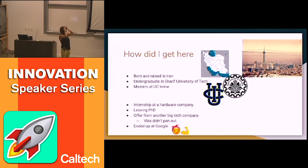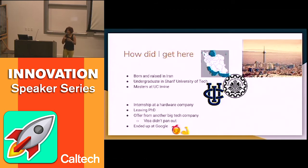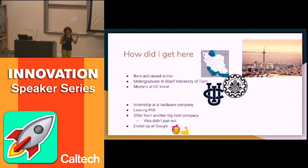At the end of the internship they gave me a full-time offer. I kind of liked working instead of staying in school, so I talked with my advisor and left the PhD program. But I also got a good offer from another big tech company. I was ready to go — I had a goodbye party, sold all my furniture. But my visa didn't pan out, so I had to stay at the hardware company for another nine months. Then I interviewed at Google and ended up here.